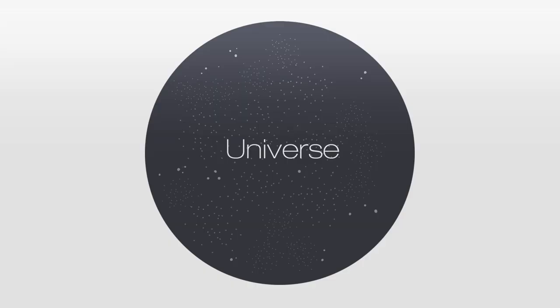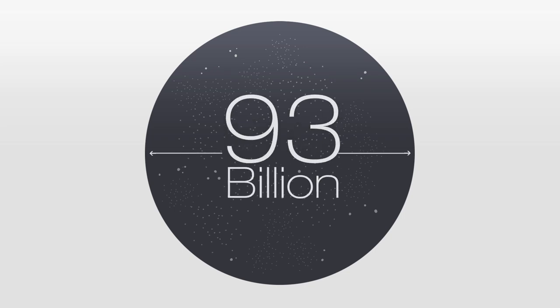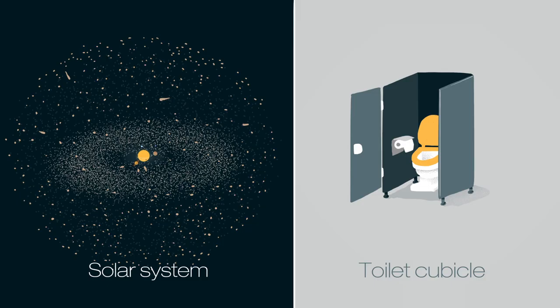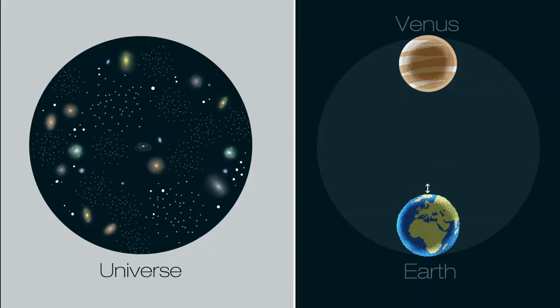So based on all the information we currently have, the proper size of the universe is 93 billion light years across or 884 billion trillion kilometers or if our solar system was the size of a toilet cubicle, it would span the distance from Earth all the way out to Venus. Pretty big, eh?